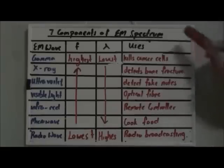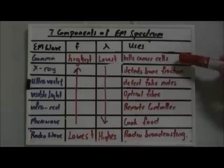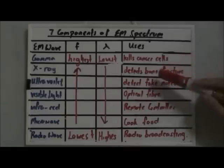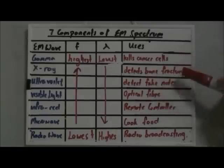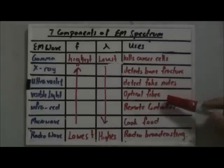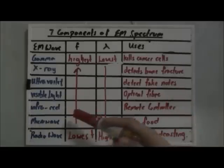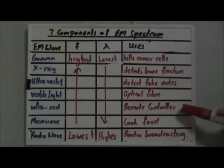Now lastly, let's go on to the uses. Gamma ray is used to kill cancer cells, and x-ray is used to detect bone fracture. Ultraviolet radiation is used to detect fake bank notes, and visible light is used in optical fiber for telecommunication. Infrared radiation is used as remote control. Microwave is used to cook our food, and radio wave is used for radio broadcasting.